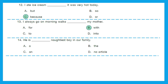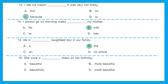Question 14: 'He is dash naughtiest boy in our family.' Naughtiest is superlative, and we use the article 'the' with superlative adjectives. So option B, 'the,' is the right answer. Question 15: 'She wore a dash dress on her birthday.' The right answer is option A, 'beautiful,' because it rightly describes the quality of the dress — she wore a beautiful dress on her birthday.